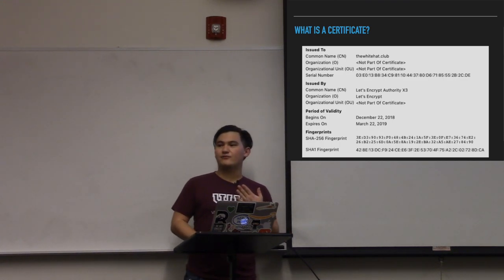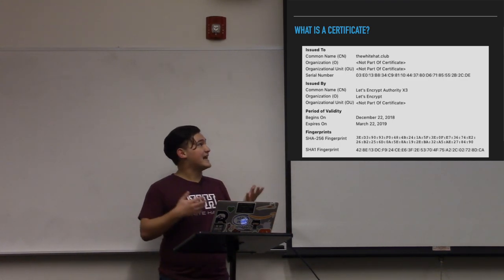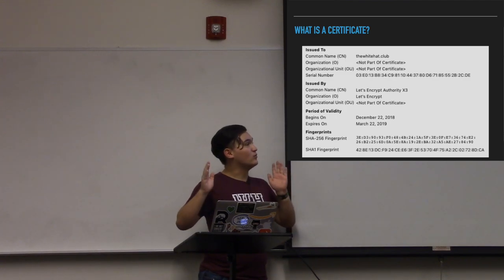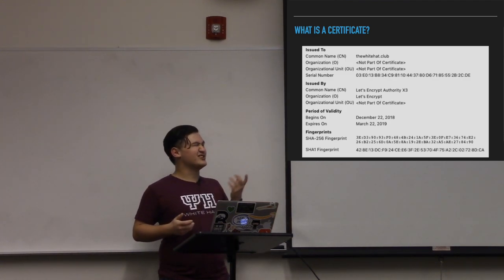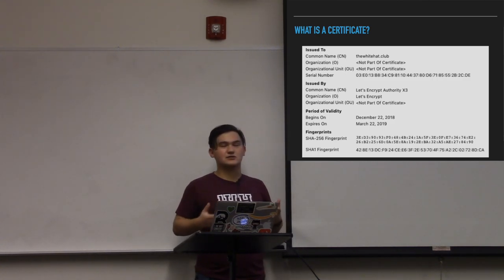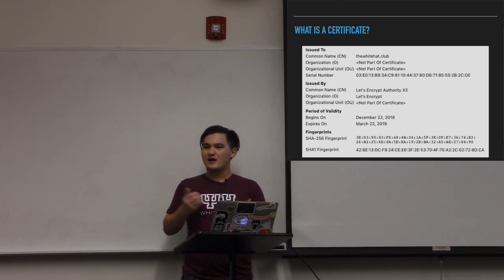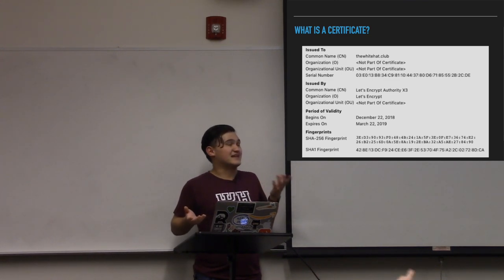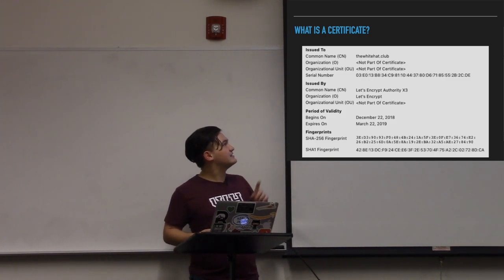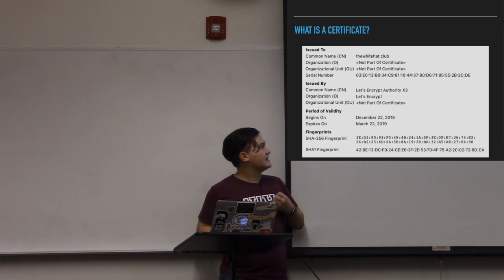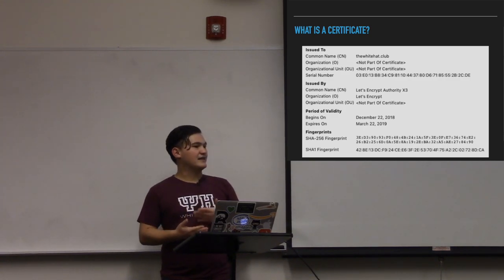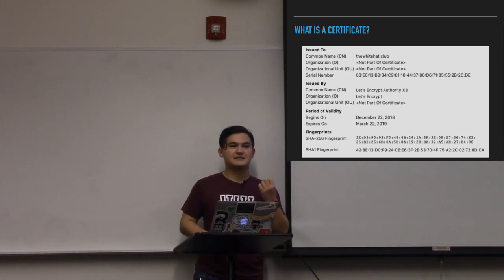So it will have a common name. It might also have what are known as subject alternative names or SANs, which are essentially alternate names people might also use to hit us from. That's not that common anymore because it's so easy and cheap that if you need multiple names, you just get multiple certificates. It will also have information about who is vouching for you — in this case the issuer, which is Let's Encrypt. It will have a period of validity, and then it will contain a signed public key.